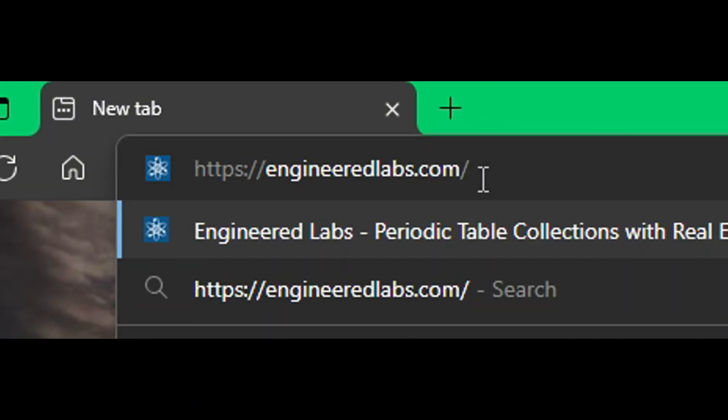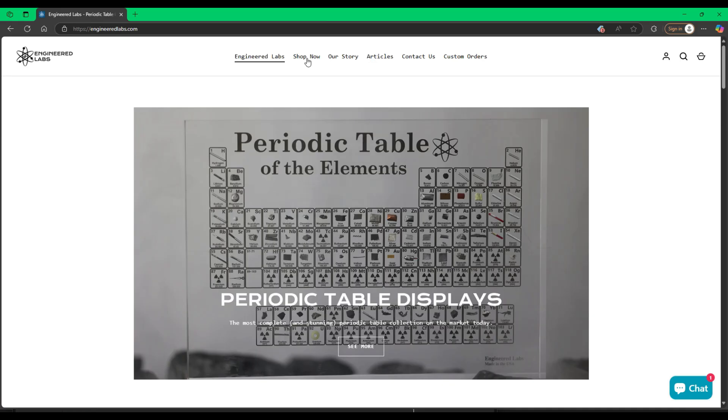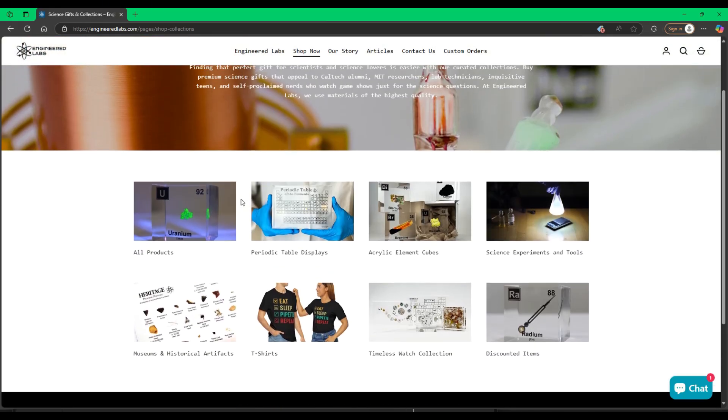If you want to try this at home, you can go to our store page at engineeredlabs.com. We offer the noble gases kit, as well as the mini Tesla coil that you see here, and you guys can play around with it.